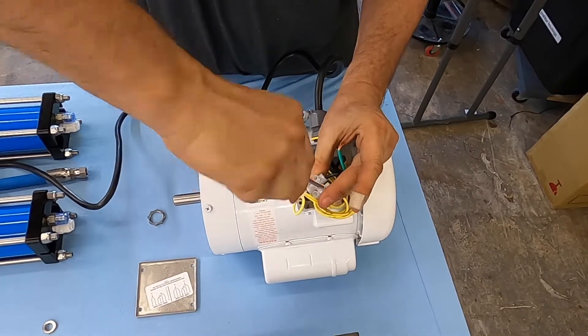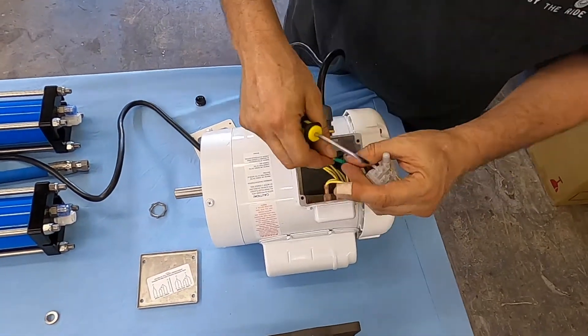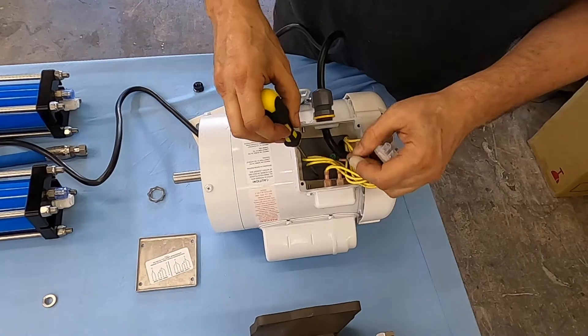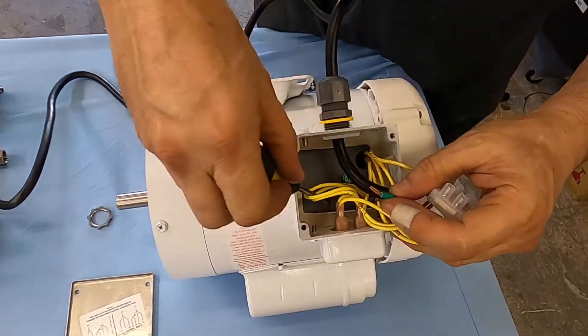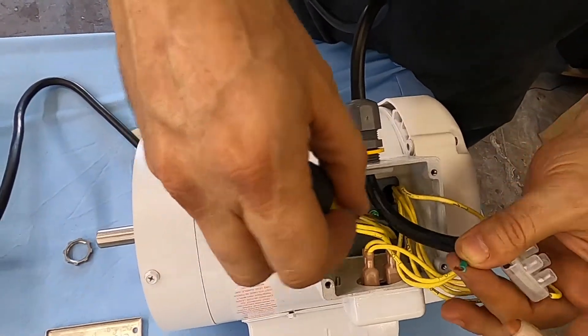So this is again the 110 setup. And the ground will go down at the bottom of the motor. There is a green screw. That's where the green cable goes.